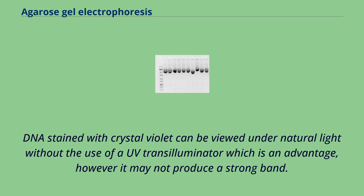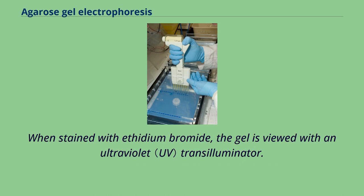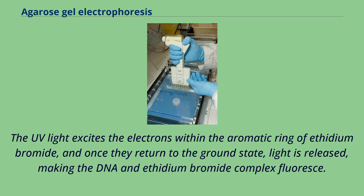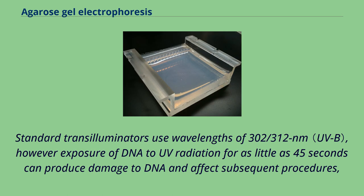The gel is viewed with an ultraviolet transilluminator. UV light excites the electrons within the aromatic ring of ethidium bromide, and once they return to the ground state, light is released, making the DNA–ethidium bromide complex fluoresce. Standard transilluminators use wavelengths of 300–312 nm; however, exposure of DNA to UV radiation for as little as 45 seconds can produce damage to DNA and affect subsequent procedures.